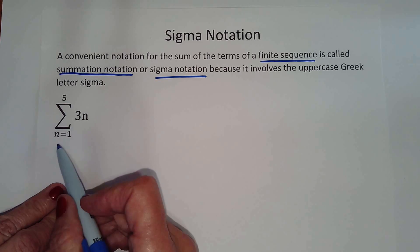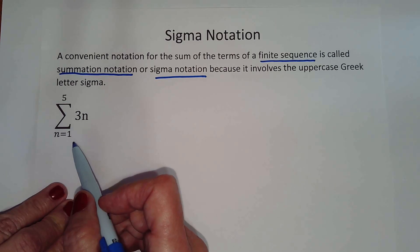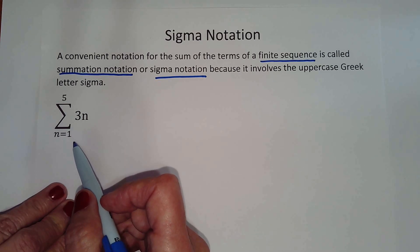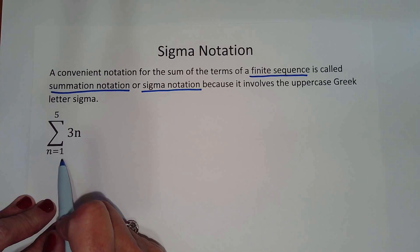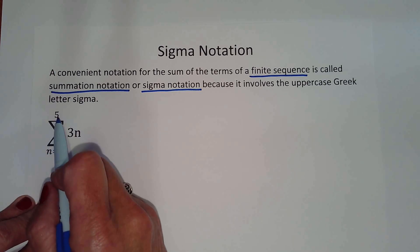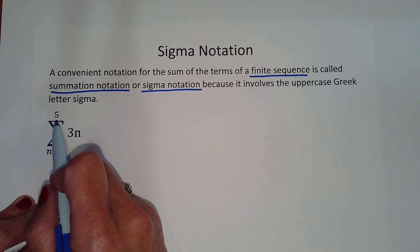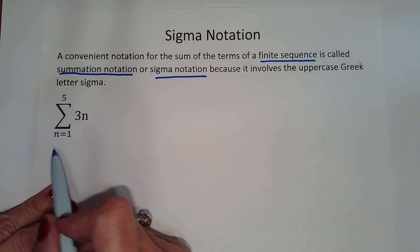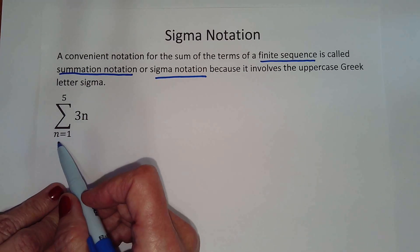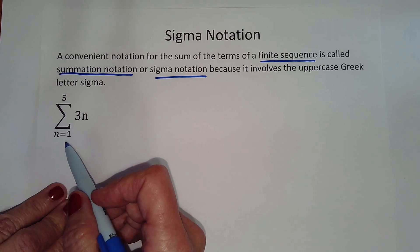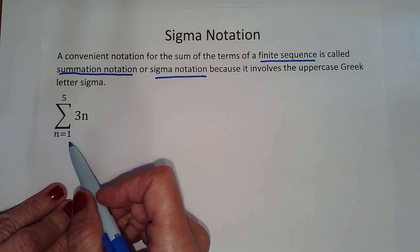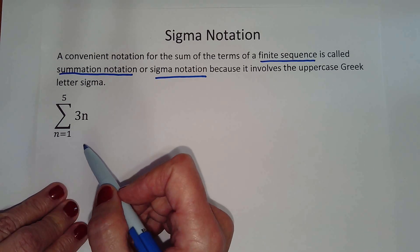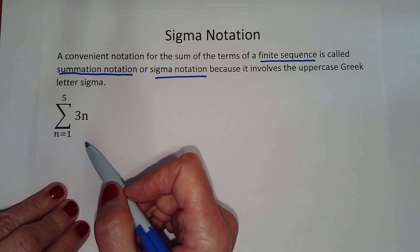At the bottom we see n equals 1. This is our lower limit — it's where we start. At the top of the letter we see 5. This is our upper limit; it tells us where to stop. The values of n are 1, 2, 3, 4, 5. We simply substitute these values in for n.